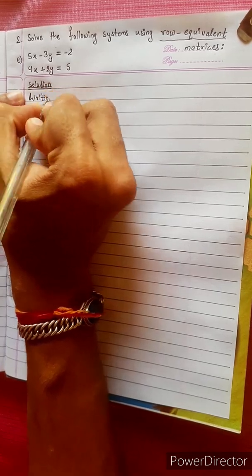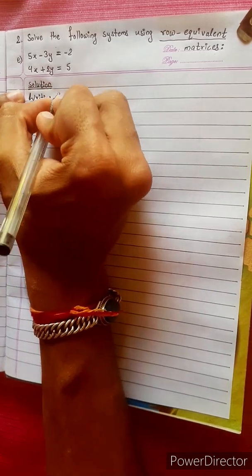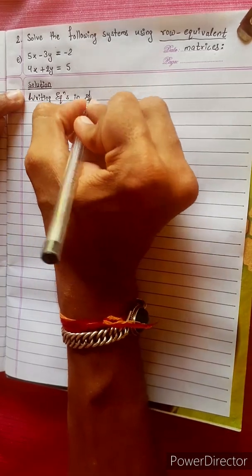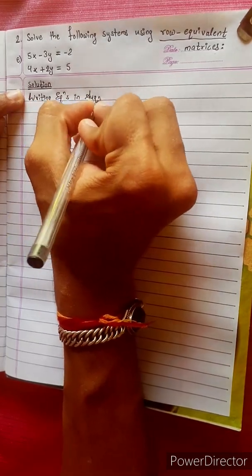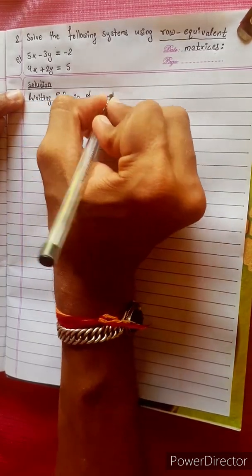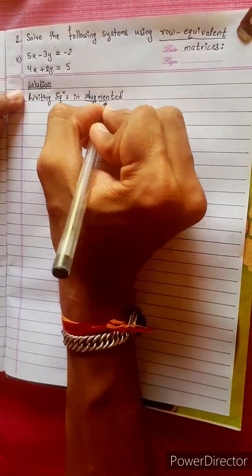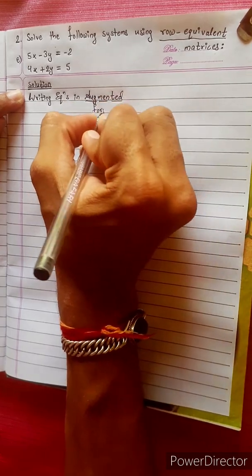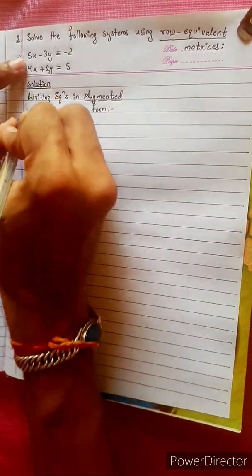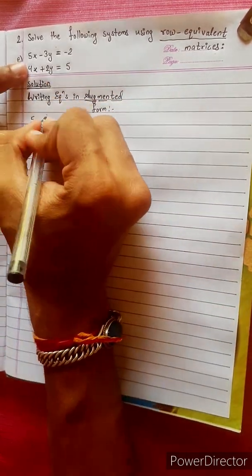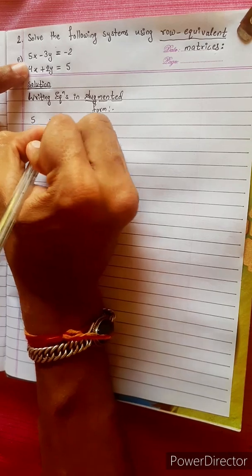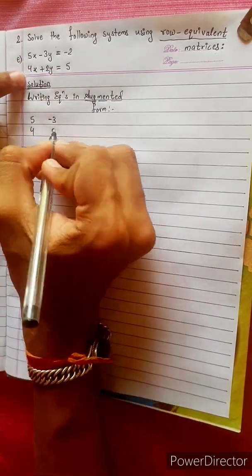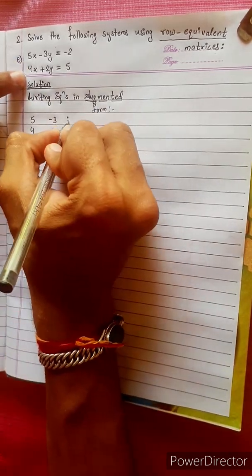Writing the equations in augmented form. Augmented form — what does it mean? Coefficient-coefficient: 5, -3, 4, 2, equal to 80.